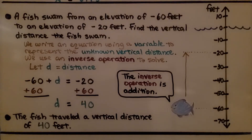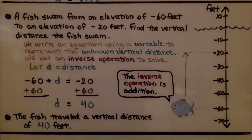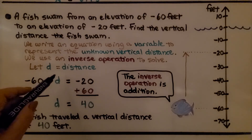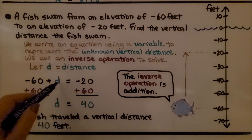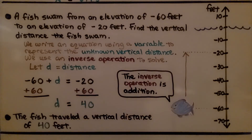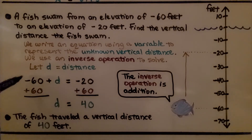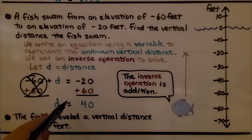A fish swam from an elevation of negative 60 feet to an elevation of negative 20 feet. Find the vertical distance the fish swam. We write an equation using a variable d to represent the unknown vertical distance. We have negative 60 plus d equals negative 20. We add 60 to both sides to isolate d, creating a zero pair. Adding 60 to negative 20 gives positive 40. The fish traveled a vertical distance of 40 feet.